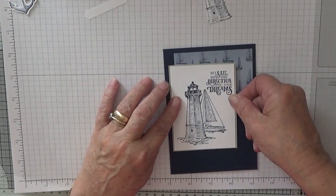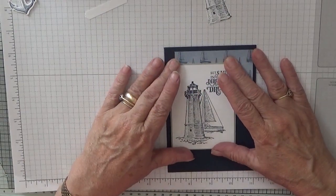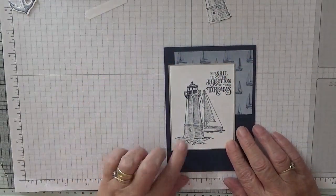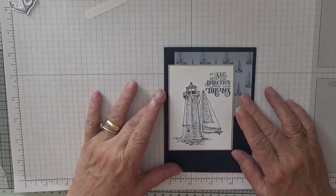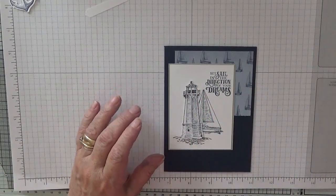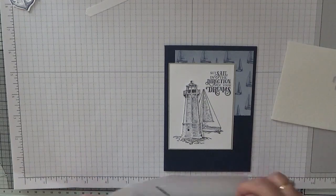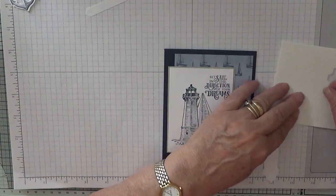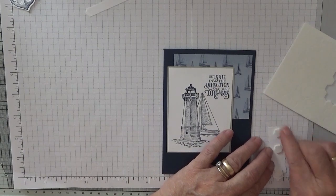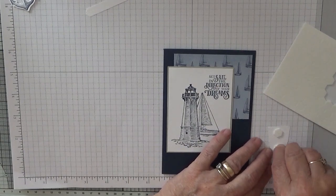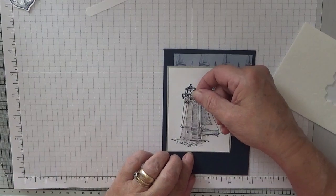Just a little bit off of there. Right, we need dimensionals for the lighthouse because that's going to sit on top of there. So let's get some dimensionals out. Right, three on there, take off the backings, place that on top of the lighthouse.